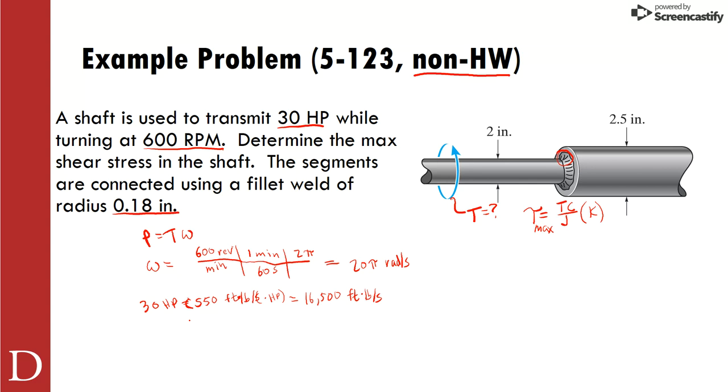So then we finally go solving for our torque. Our torque here is power over omega. Just rearranging this equation here. So we have our power is 16,500 over 20 pi. So our torque equals 262.6 pound feet. So that means that we're putting 262.6 pound feet of a torsional moment on this shaft at this location. So then we're going to need that in our calculation for our shear stress, our average shear.